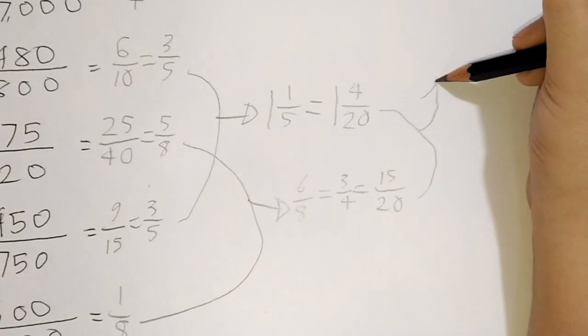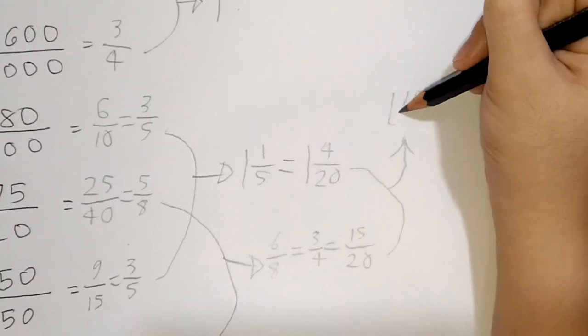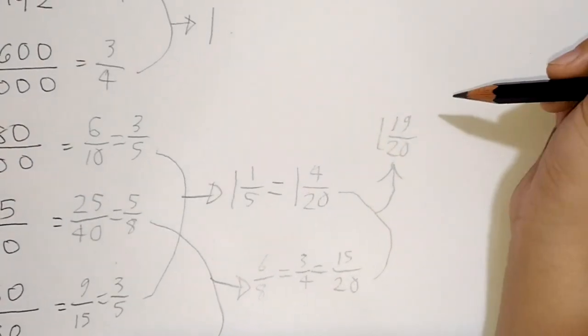I'm singing a song. Okay. This is 1, 19 over 20.